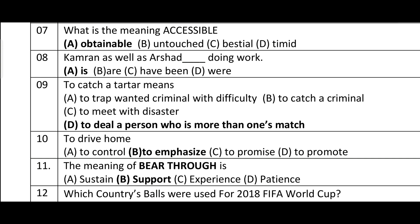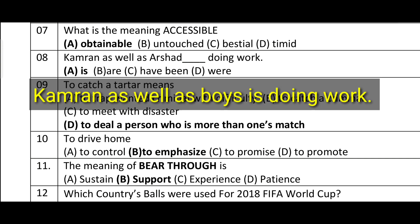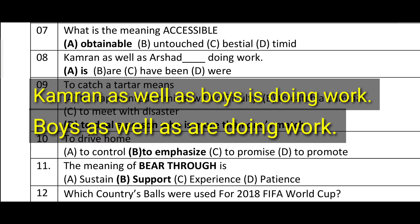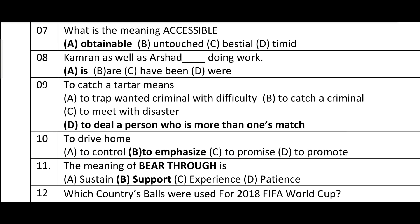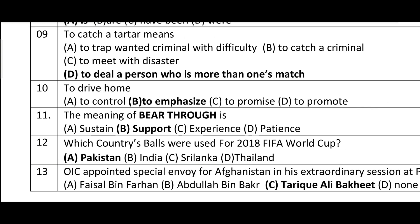With 'as well as', verb agreement is made with the first subject. Kamran is singular, so 'is' is correct. For example: 'Kamran as well as boys is doing work' or 'Boys as well as Ahmed are doing work'. 'As well as' agreement binds to the first subject of the sentence.